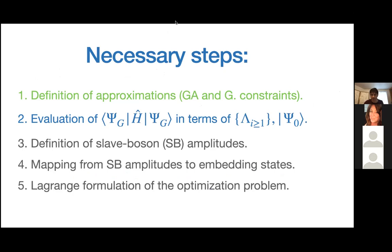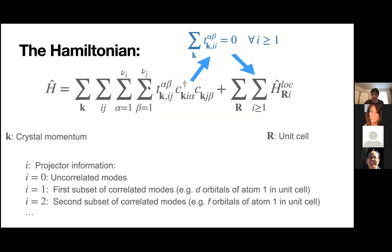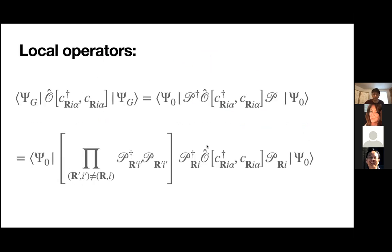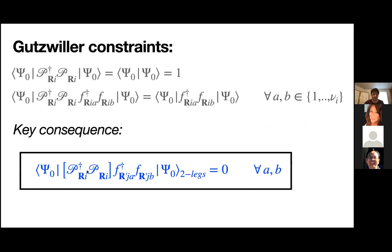There are two questions. On the bracket notation: the bracket here is just to help the eye, to identify this P†P block graphically as a single unit out of which zero or two legs can come. There is no deeper meaning — it's purely a visual choice and could be removed.